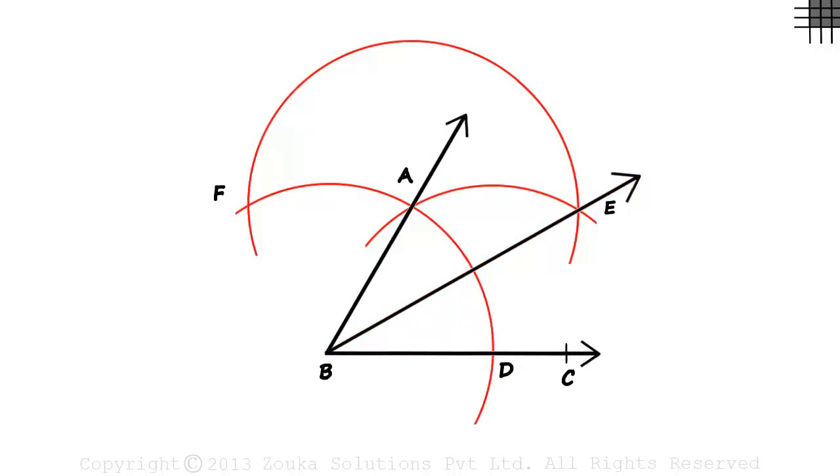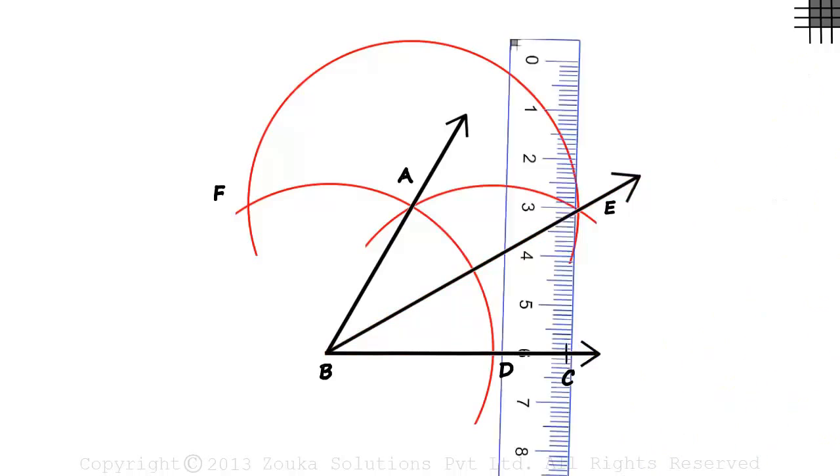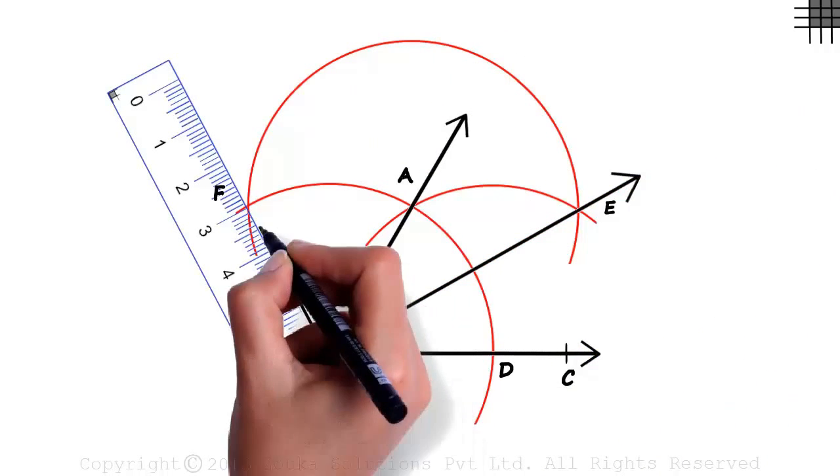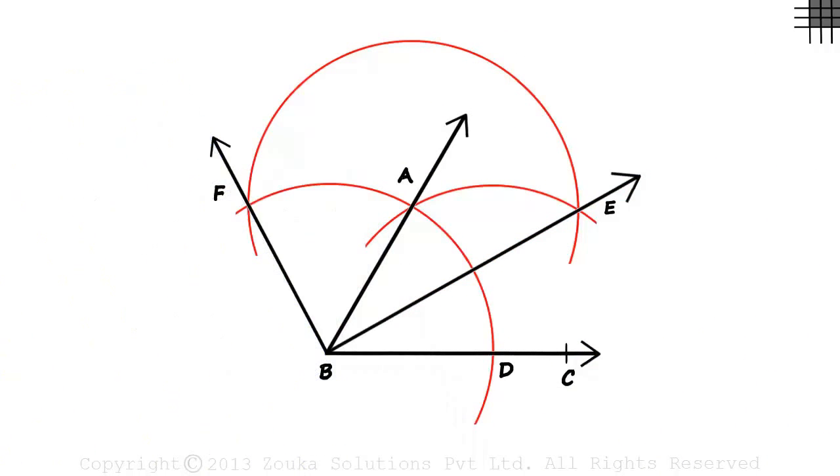To get the 120 degree angle, we join points B and F to get angle FBC. The measure of angle FBC will be 120 degrees. So with the base angle being 60 degrees, we constructed two more angles: half that of 60 degrees and twice that of 60 degrees.